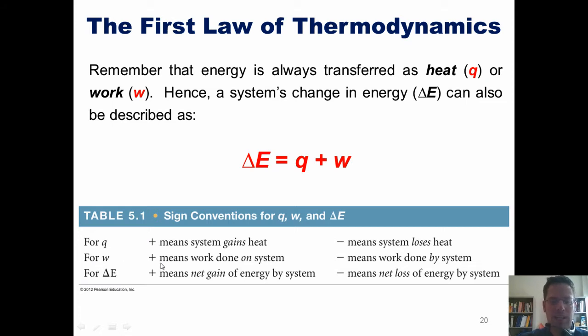Similarly, if work is done on the system, the overall sign of delta E is positive. If work is done by the system to its surroundings, the overall sign is negative. And in full, we can see that if delta E is positive, it means that there's a net gain of energy by the system from its surroundings. And if it's negative, it means there's a net loss of energy by the system to its surroundings.